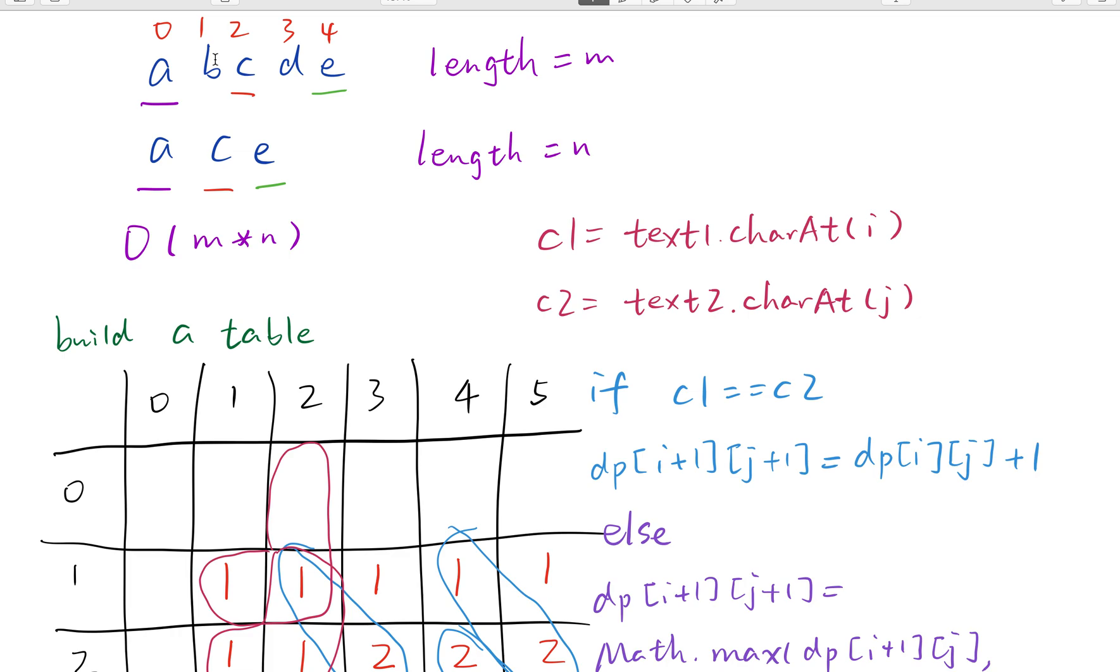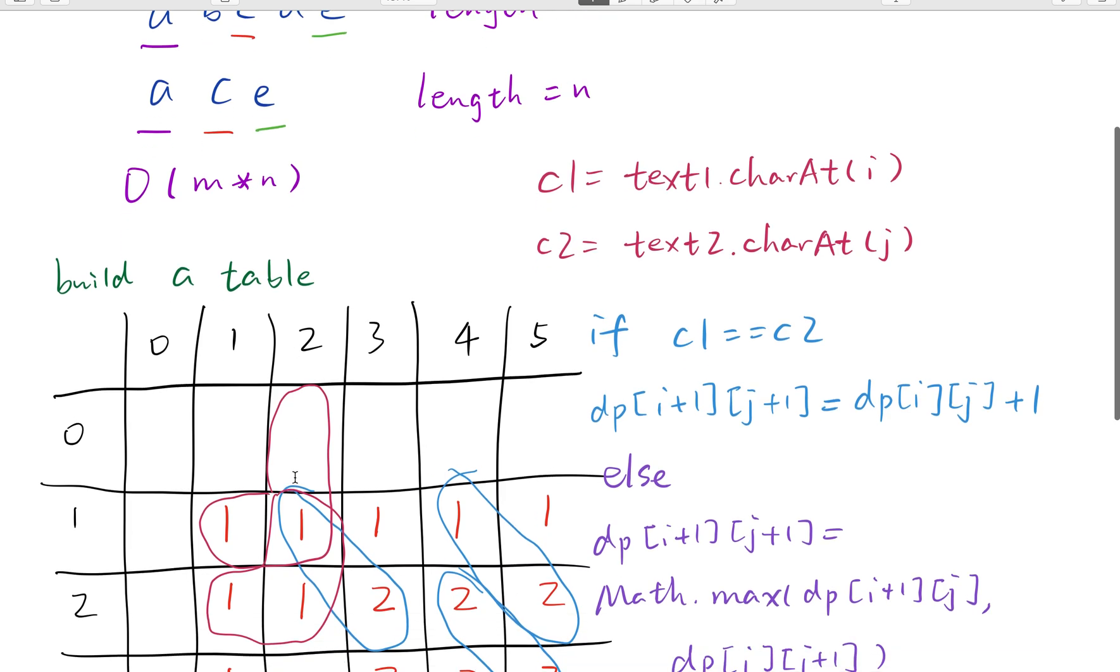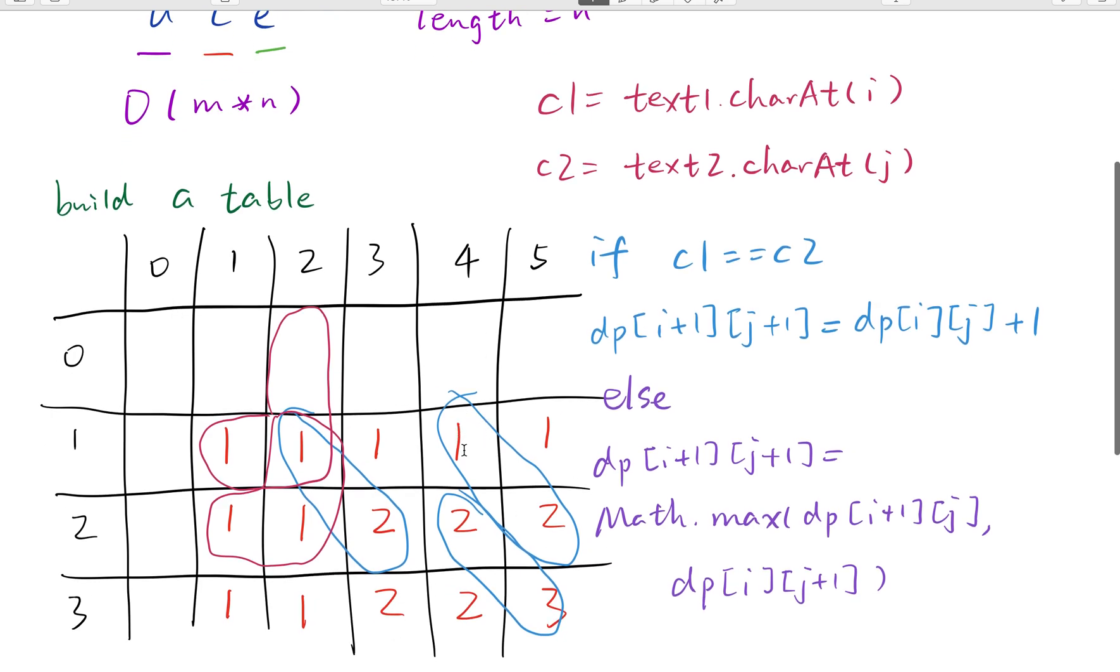So when we move two pointers backward, actually we get the value of DP[i-1][j-1]. So this place, this cell. So when they are equal, we add one more. So we get 2. It's the same to these two places.